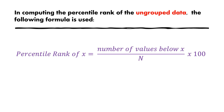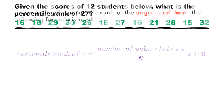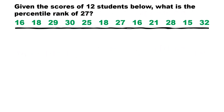To understand this, let's have an example. Given the scores of 12 students below, what is the percentile rank of 27?